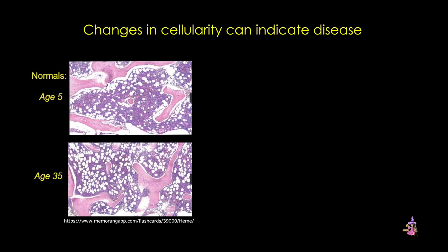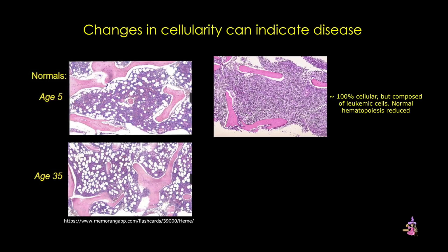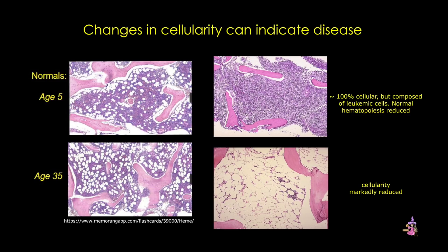Pathologists examine the cellularity of bone marrow — that is, the percent of cells versus the percent of adipocytes. There are nice correlations between cellularity and age, as shown by comparing marrow from a 5-year-old versus a 35-year-old, with a definite increase in adipocytes in the older patient. Changes in cellularity can indicate problems in hematopoiesis or cancers. For example, too many cells in a 45-year-old indicates cellularity that's too high — in this case, a leukemia — with normal hematopoiesis reduced. Conversely, cellularity near zero could indicate a very old person or a severe aplastic anemia.